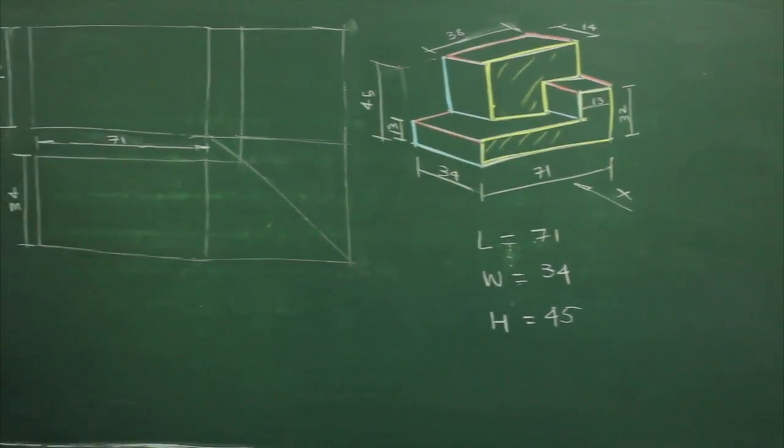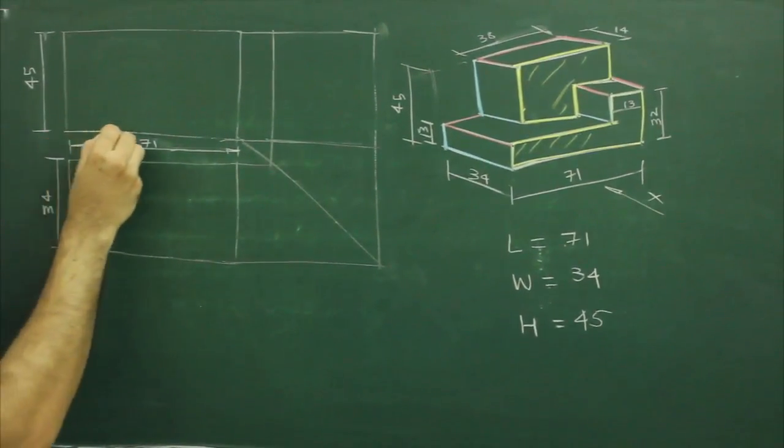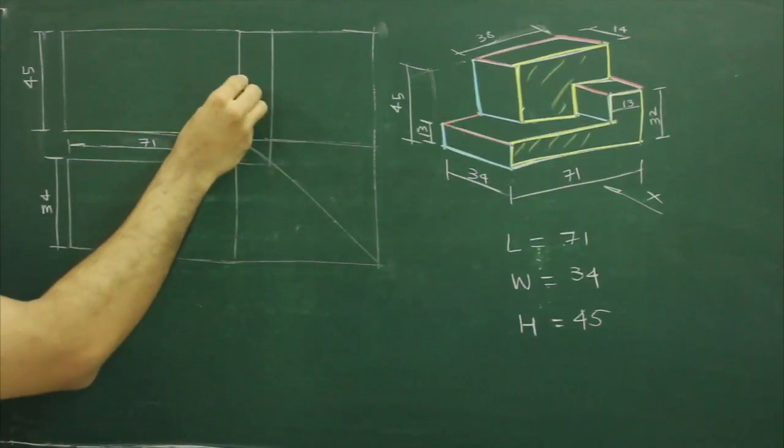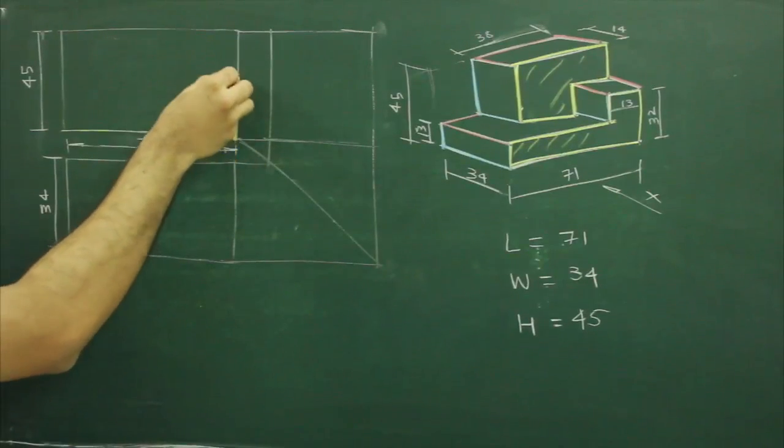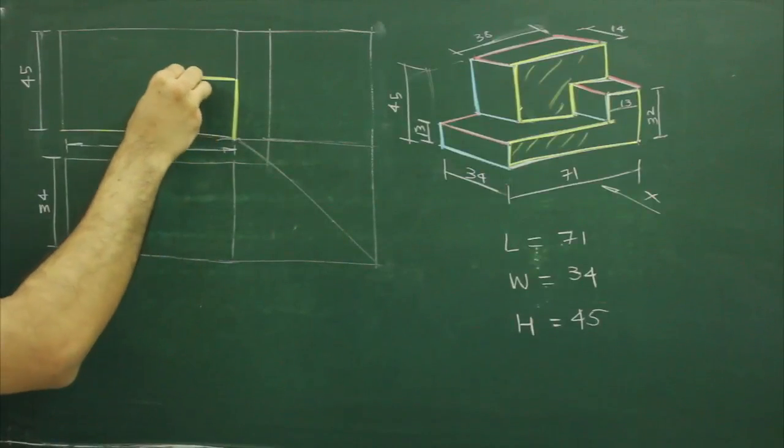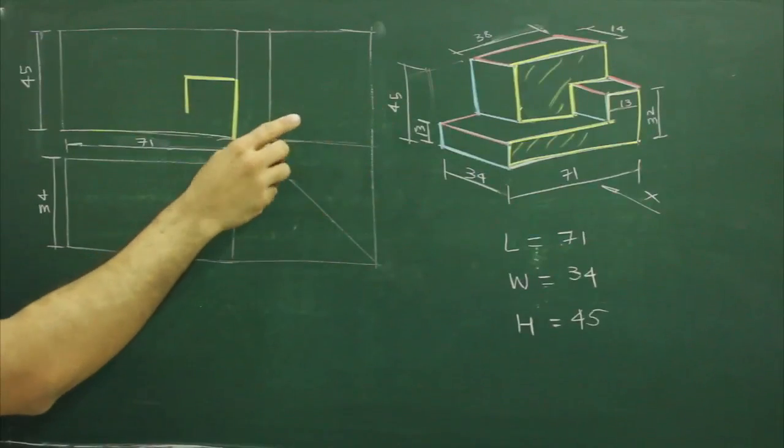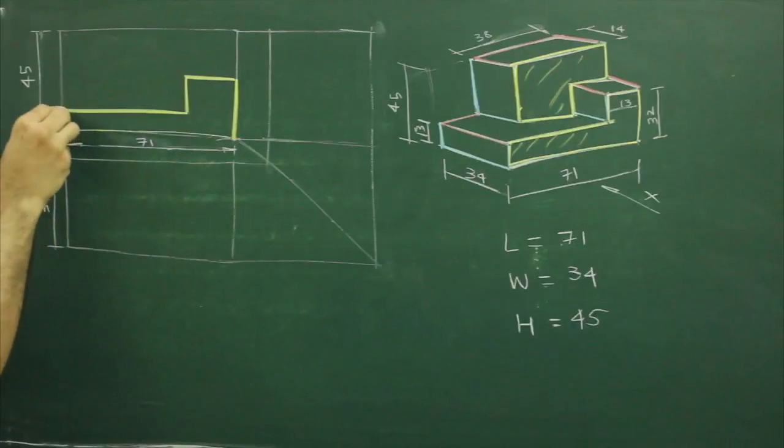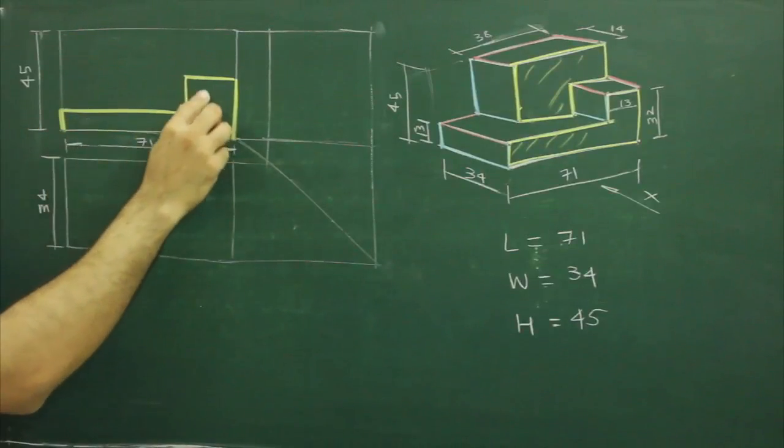So to draw this, first we will mark 71, height 32, then go inside by 13, then you go down by 32 minus 13, then you take horizontal line and you draw 13 up. So you will get the first part.